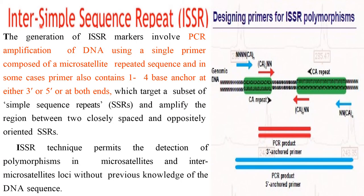Inter-Simple Sequence Repeat, also called ISSR. Generation of an ISSR marker involves PCR amplification of DNA using a single primer composed of a microsatellite repeat sequence. In some cases, the primer also contains one to four base pair anchors at either the 3-prime or 5-prime end, or at both ends, which targets a subset of simple sequence repeats and amplifies the region between two closely spaced and oppositely oriented SSRs. The ISSR technique permits detection of polymorphism in microsatellite and inter-microsatellite loci without prior knowledge of the DNA sequence.